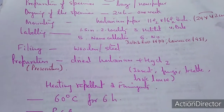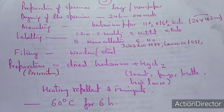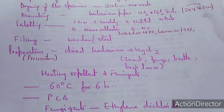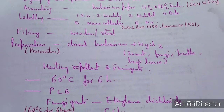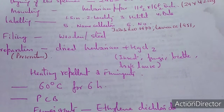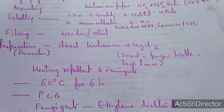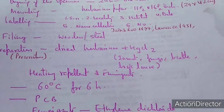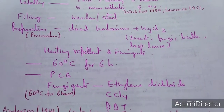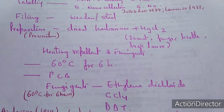Then the filing is done; wooden as well as steel cupboards are prepared for that. You follow whichever classification system you are following. Then preparation of the dried herbarium involves treating with mercury chloride, which can be used as a preservative to avoid insects, fungi, beetles, as well as book lice. Heating and fumigation can also be done at 60 degrees for six hours.